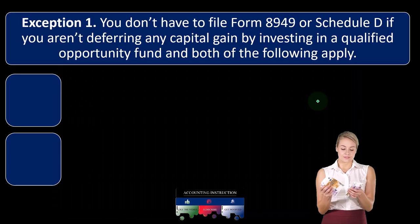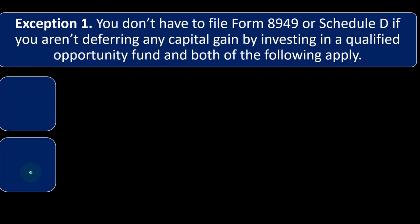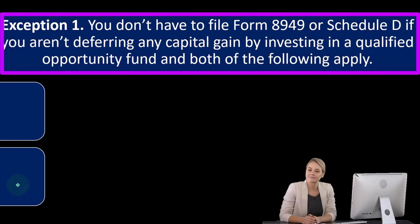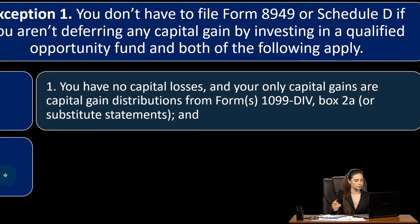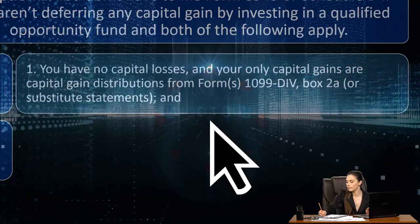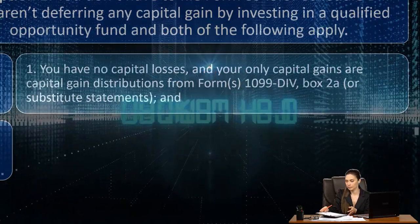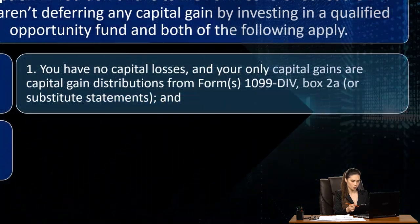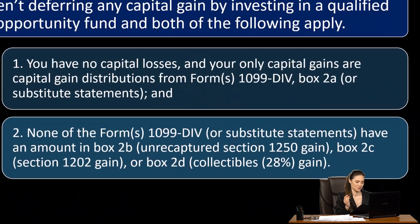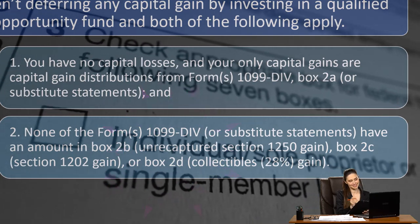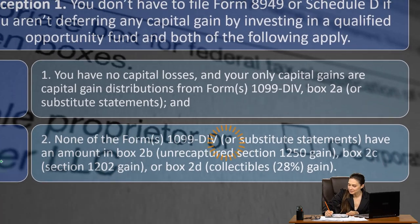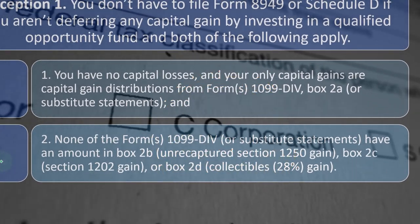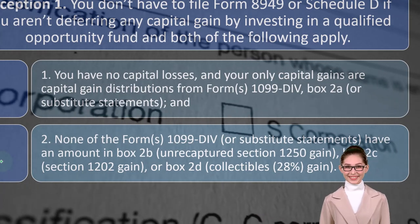Exception 1: You don't have to file Form 8949 or Schedule D if you aren't deferring any capital gain by investing in a qualified opportunity fund, and both of the following apply: (1) you have no capital losses and your only capital gains are capital gain distributions from Forms 1099-DIV box 2A or substitute statements; and (2) none of the Form 1099-DIV or substitute statements have an amount in box 2B (unrecaptured Section 1250 gain), box 2C (Section 1202 gain), or box 2D (collectibles 28% gain).